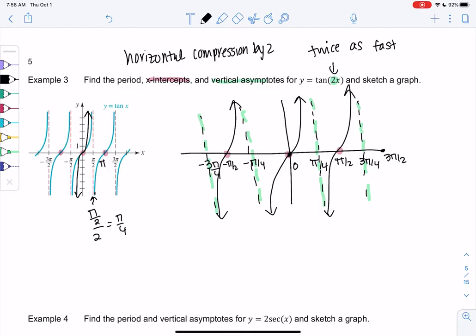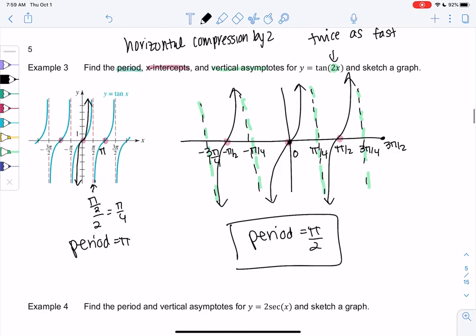Those are my intercepts and then the period would be just twice as fast. The period on regular tangent was π, so now the period is π/2. That's the graph. The main idea is everything's just happening twice as fast. We're not super memorizing these, but we're familiar with the shape. We could look at the original and sketch a graph.